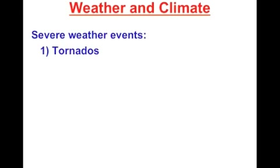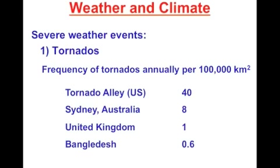The first storm type we're going to talk about is tornadoes. Tornadoes are powerful rotating funnels of air associated with severe thunderstorms. When a tornado occurs, the spinning funnel of air descends from the clouds and touches the ground. The most frequent place that tornadoes occur is in Tornado Alley, which is in the southern United States.